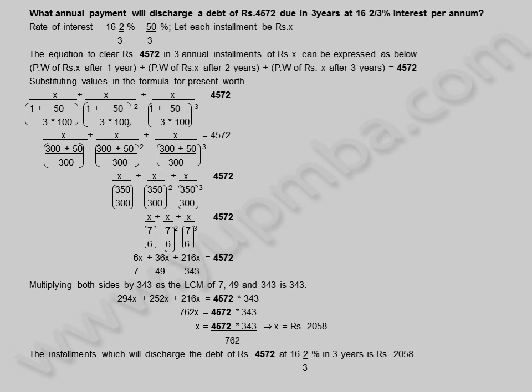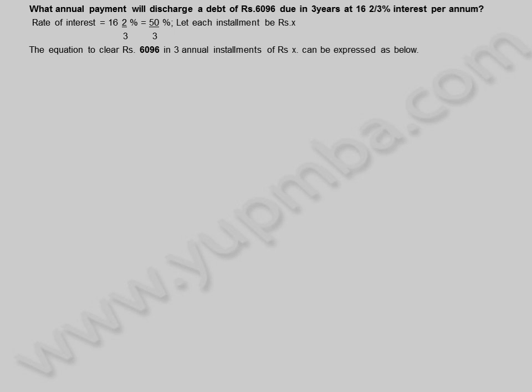Let us see another example. What annual payment will discharge a debt of 6096 rupees due in 3 years at 16 and 2 by 3 percentage interest per annum? Rate of interest is equal to 16 and 2 by 3 percentage, which equals 50 by 3 percentage. Let each installment be X rupees. The equation to clear 6096 rupees in 3 annual installments of X rupees can be expressed as below. Present worth of X rupees after 1 year, plus present worth after 2 years, plus present worth after 3 years is equal to 6096.